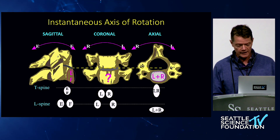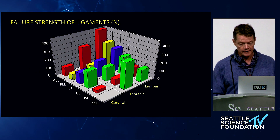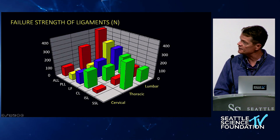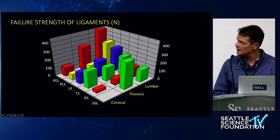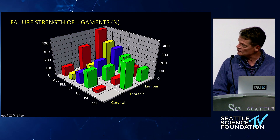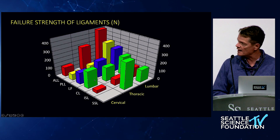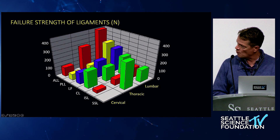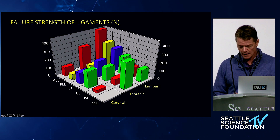Ligaments are critically important. Looking at failure force in Newtons, lumbar ligaments are much stronger than thoracic, and cervical ligaments are among the weakest — though the cervical facet capsular ligaments perform almost the same as thoracic capsular ligaments. So if you've disrupted a facet capsule, that's a major player. If only the interspinous ligament fails but the capsular ligaments are intact, you probably still have a stable spine.